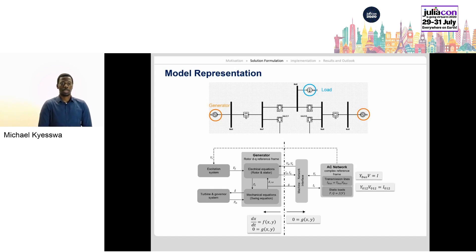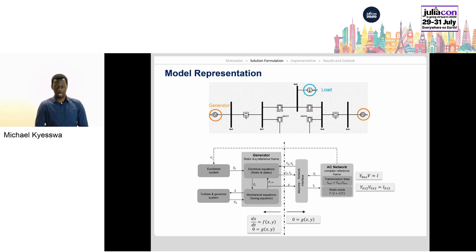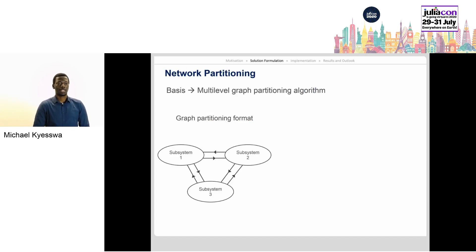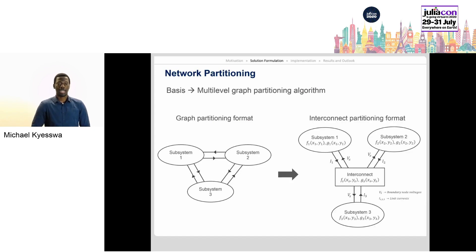Therefore, to form the parallel solution, it is necessary to split the network equation. But first, the grid has to be partitioned. Network partitioning applied in this work is based on a multi-level graph partitioning algorithm, which produces balanced subsystems interconnected to each other. In order to apply the partitions to the dynamic simulation problem, the partitioning is extended to include an interconnect subsystem, which interlinks the different subsystems in the network.